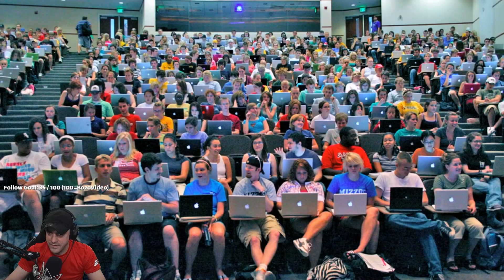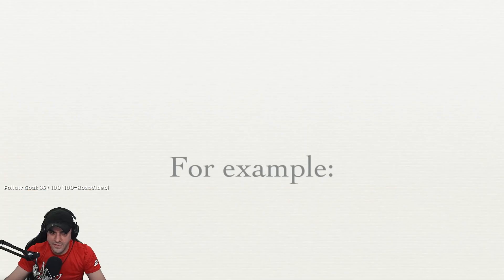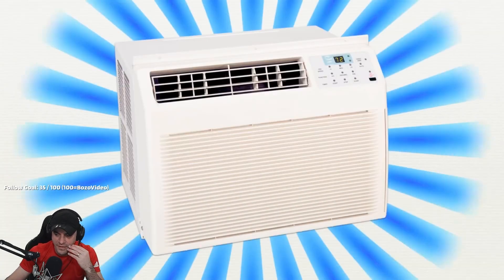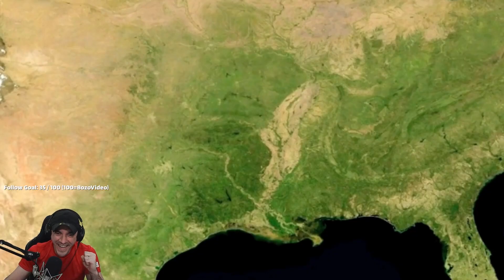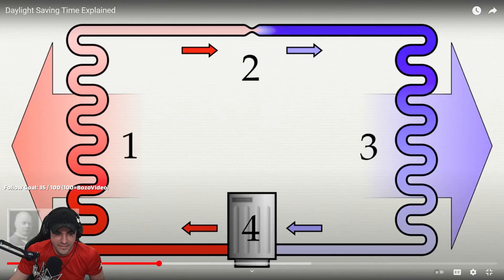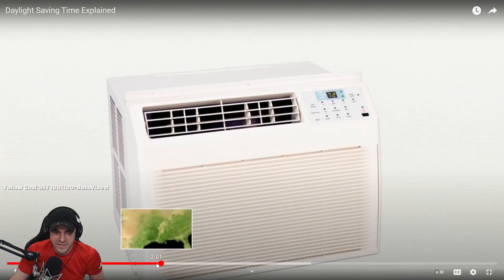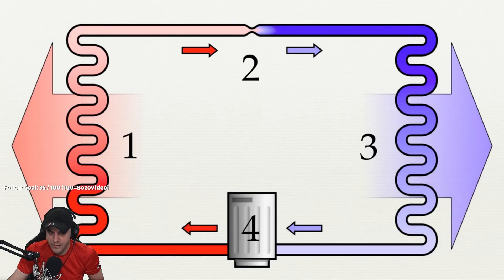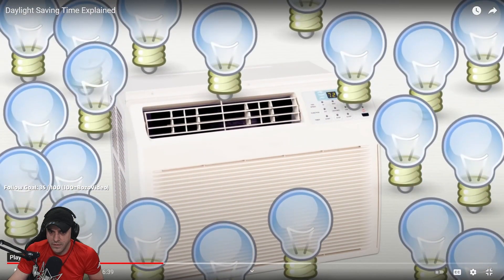That turns out to be a surprisingly difficult question to answer. For example, take Twitch.tv - it never shuts off. Air conditioning - the magic box of cool that makes otherwise uninhabitable sections of the world quite okay - pumps heat out of your house and isn't cheap. Wait, air conditioning pumps heat OUT of your house? I thought it just makes the air cold. Turning on one air conditioner is the same as running dozens of tungsten light bulbs.